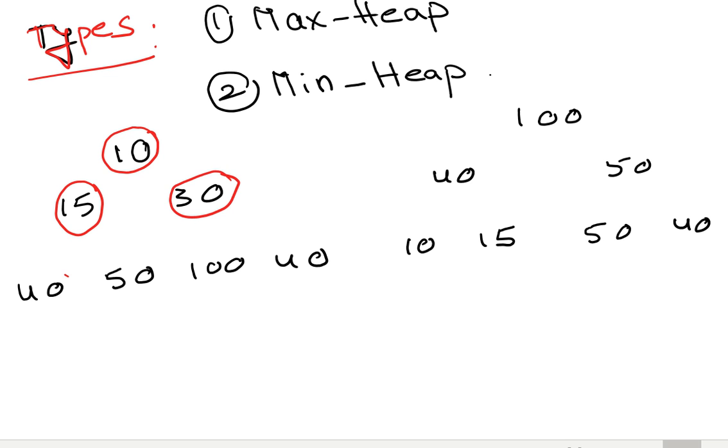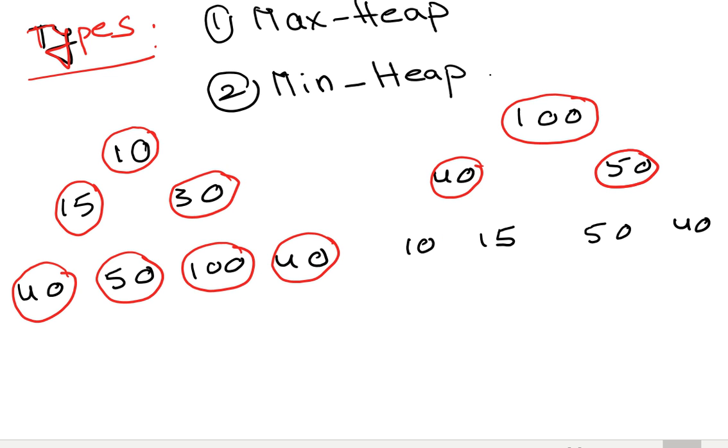This is a binary tree, a complete binary tree. Every child should have two children. See here, this is a complete binary tree where every child has left and right. This is called a heap tree.